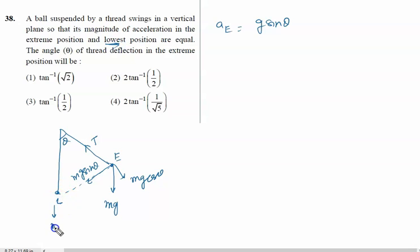At the lowest point, mg is acting in the vertical downward direction, tension upward direction. At this point the velocity is v. There is no component of the mg in the horizontal direction, so acceleration at the lowest point is written as v squared upon r.